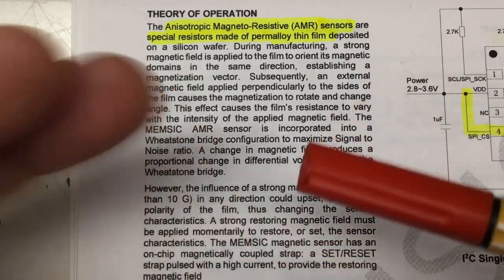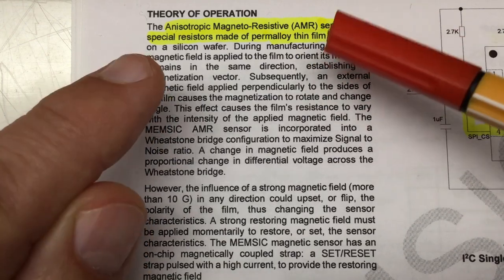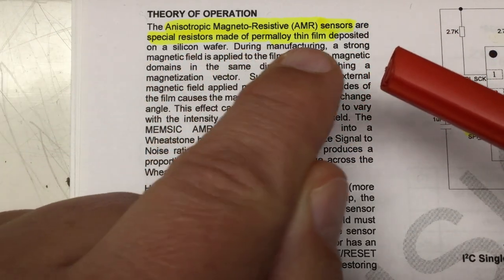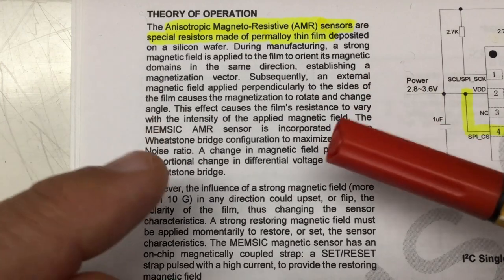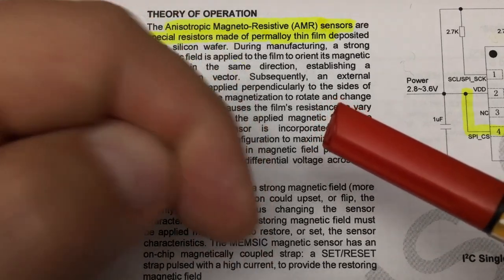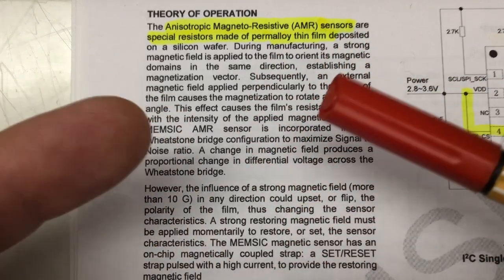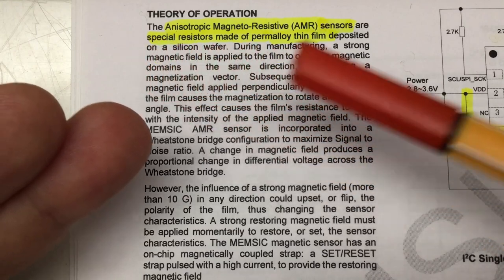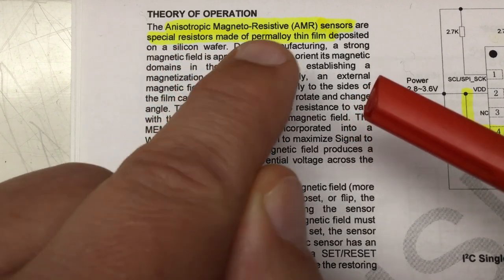It's finally time to talk about those anisotropic magnetoresistive AMR sensor stuff. And in the theory of operation of that chip, it states that these are special resistors made of perm alloy thin film deposited on a silicon wafer. I have to apologize at that point because in the basics video, I stated that I chose that chip here as the best in its class. The class being Hall effect magnetic sensors. And of course, that chip doesn't use the Hall effect.